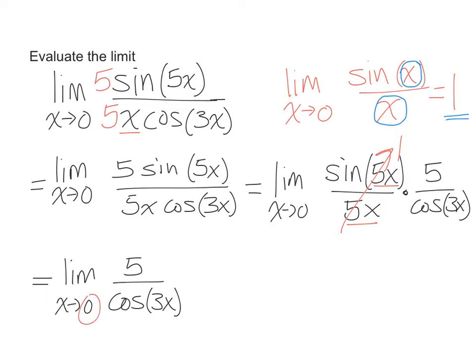And at this point, we can substitute the 0 in here. Because if we substitute a 0 for x here in cosine, this does not give us a divide by 0.